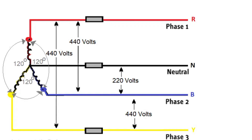If we measure the voltage between any two phase terminals, that is called the line voltage. The line voltage is equal to the phase voltage multiplied by root 3 (√3). So the line voltage will be approximately 220 volts multiplied by √3, which gives approximately 440 volts.